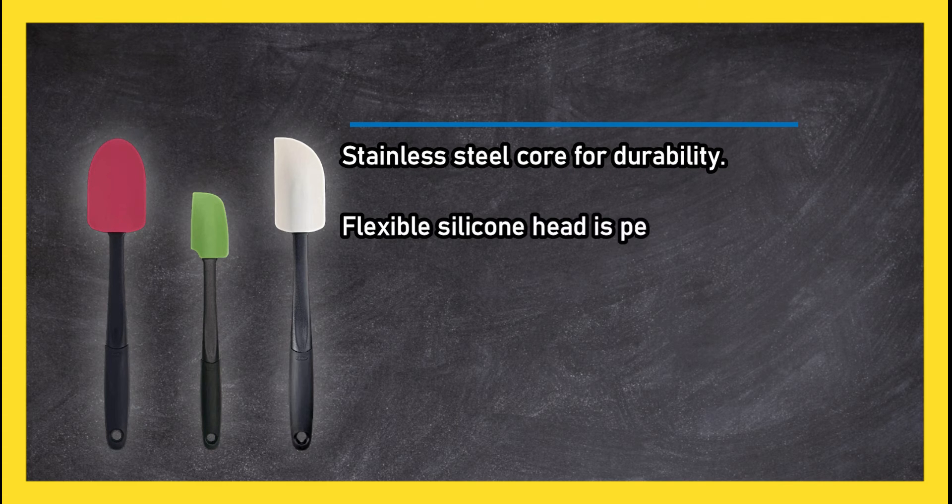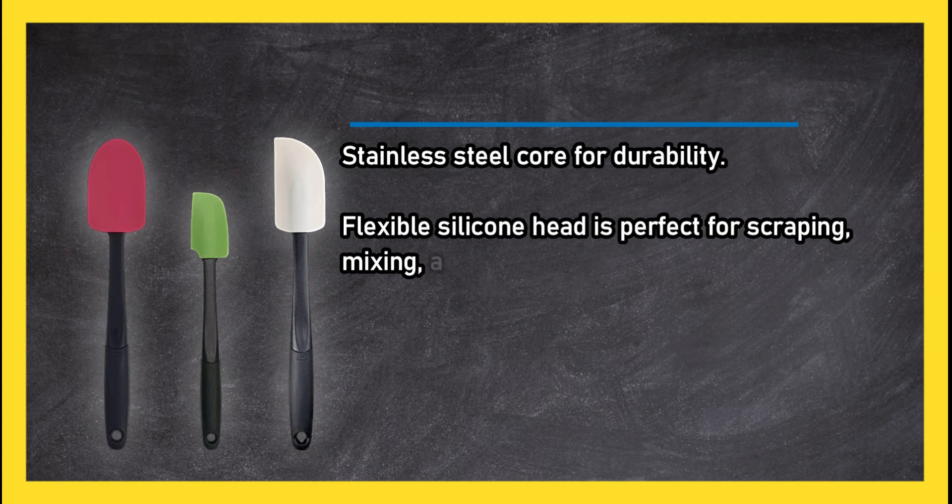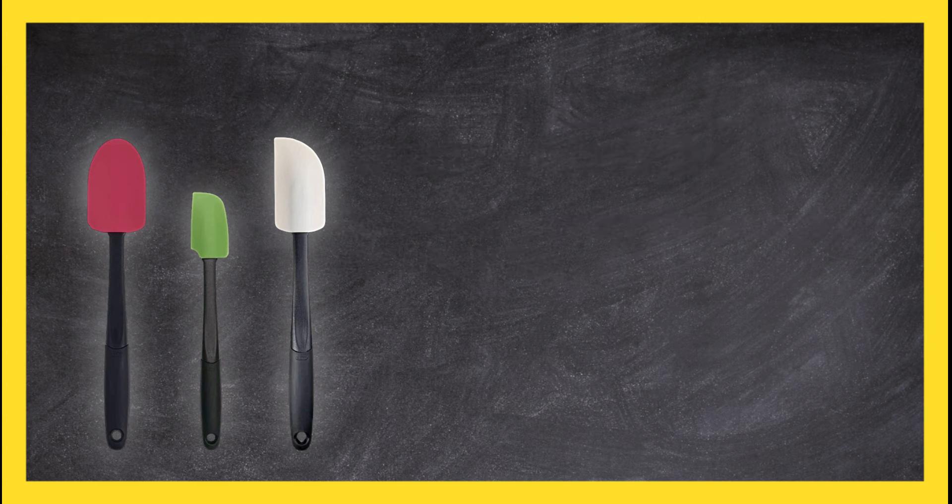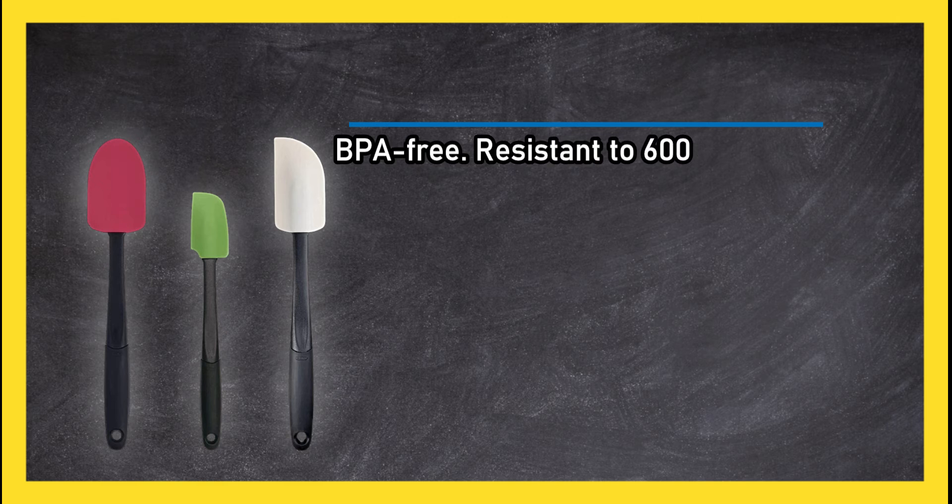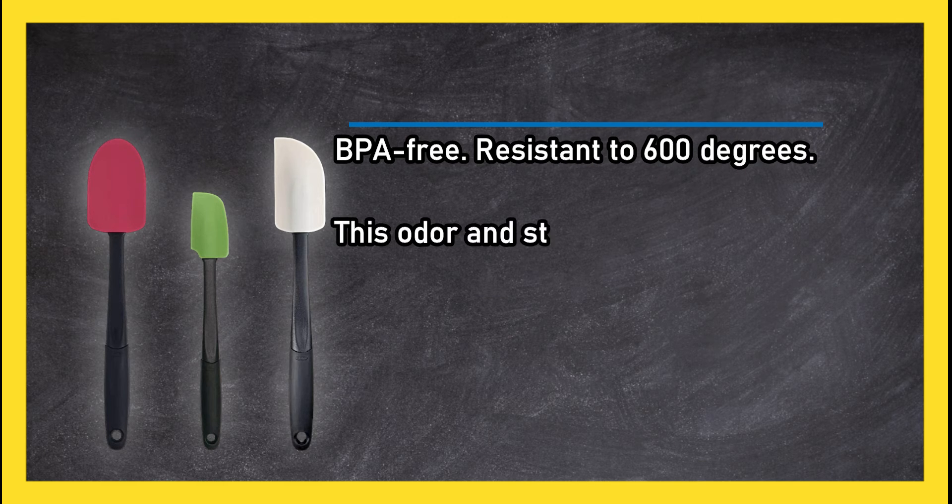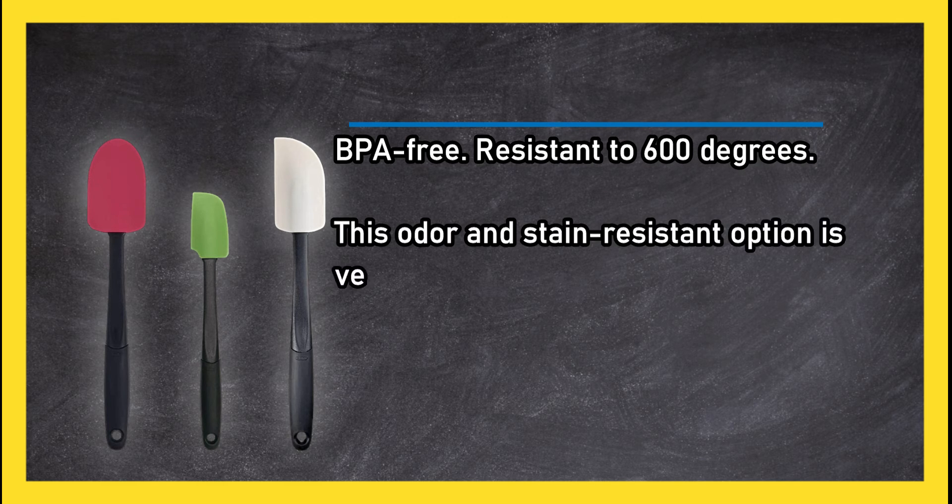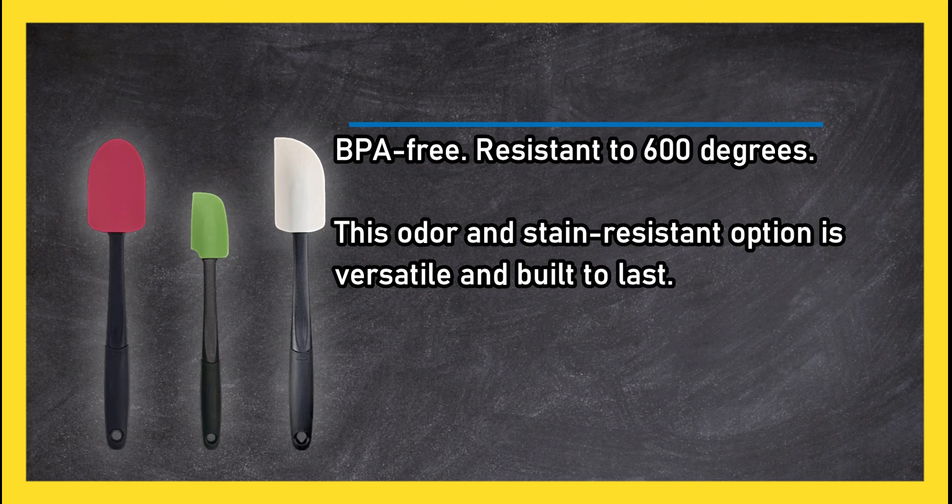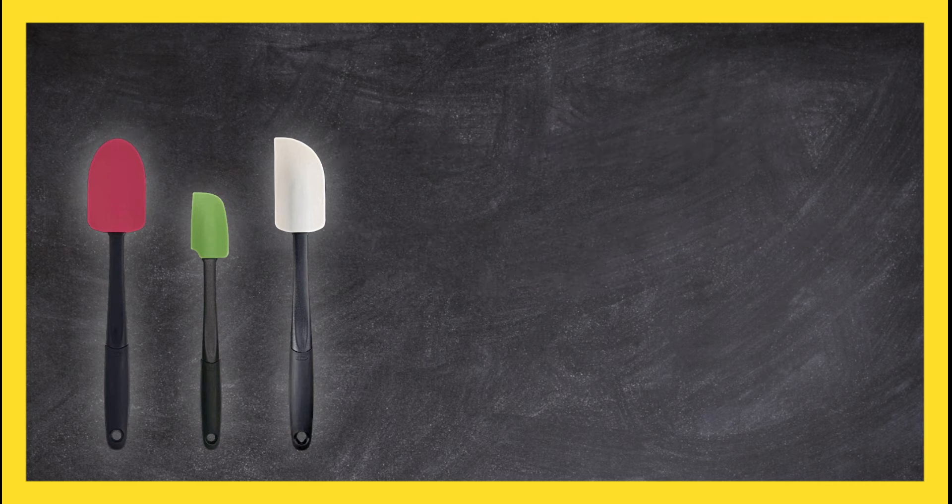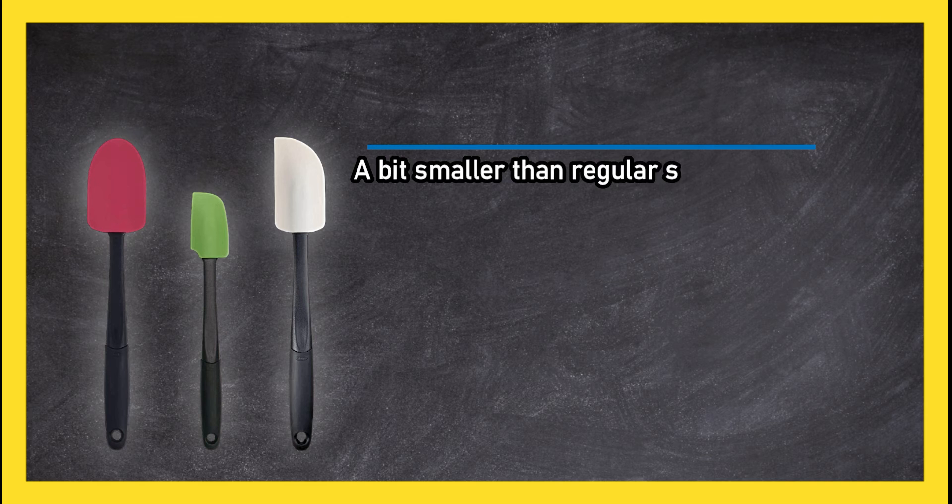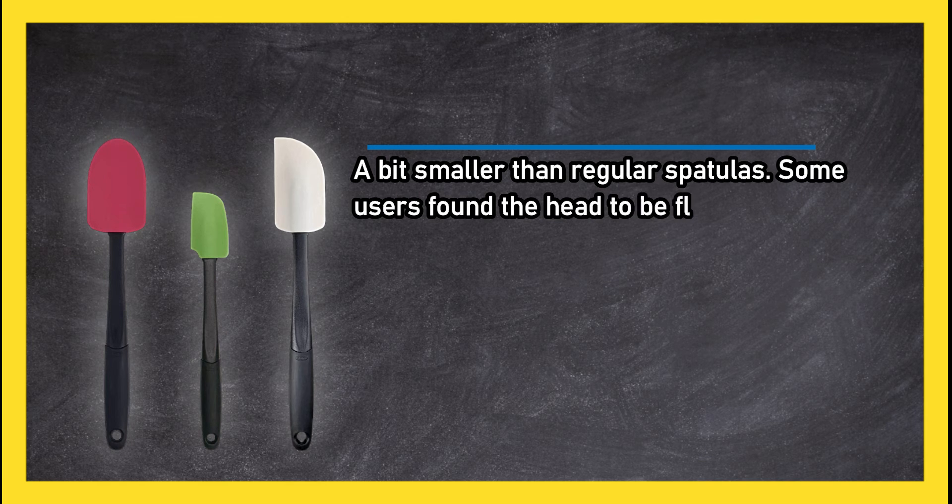Flexible silicone head is perfect for scraping, mixing, and folding. BPA free, resistant to 600 degrees. This odor and stain resistant option is versatile and built to last. A bit smaller than regular spatulas; some users found the head to be flimsy.